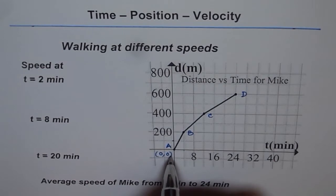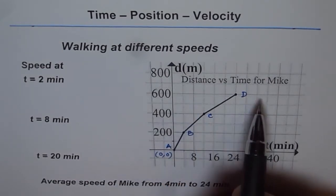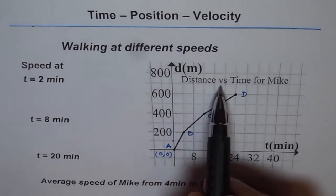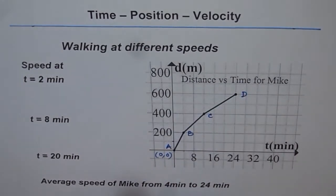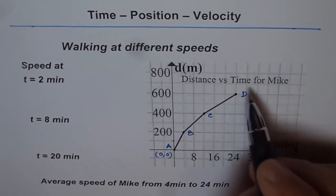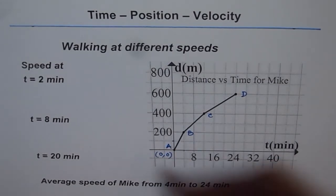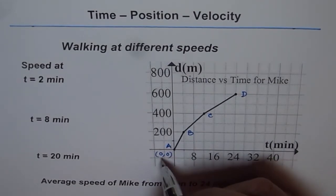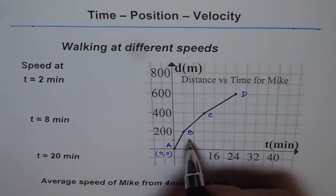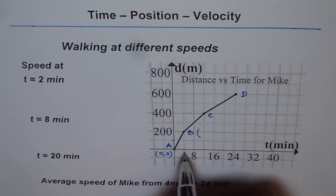This is a distance versus time graph for Mike, who is moving along a path towards school from home. Home is position A at (0, 0). Position B is at time 4 minutes and distance 200 meters, so B is (4, 200).